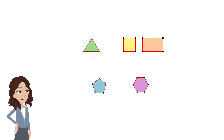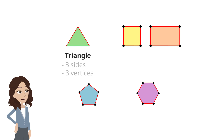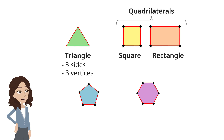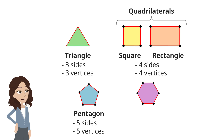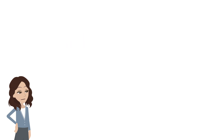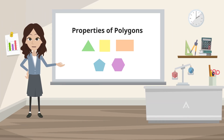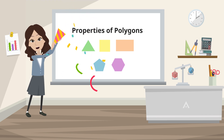Now let us summarize the polygons we have learned. A triangle has three sides and three vertices. A quadrilateral such as a square or rectangle has four sides and four vertices. A pentagon has five sides and five vertices. A hexagon has six sides and six vertices. So we have learned about properties of polygons. Great job on completing this video — hope to see you again.